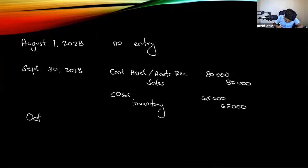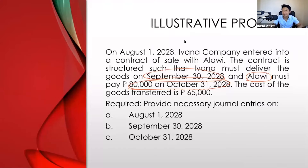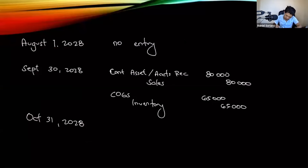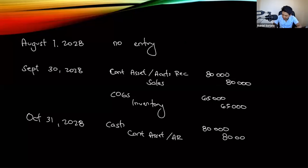On October 31, 2028, the buyer paid. Both parties have now performed. So we de-recognize the contract asset. The journal entry is: debit cash; credit contract asset (or accounts receivable) equal to $80,000. These are the journal entries for illustrative problem number one.